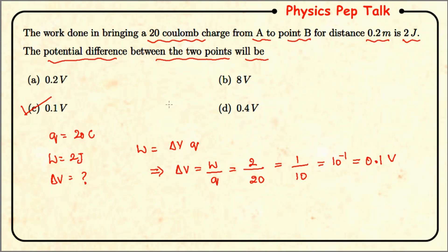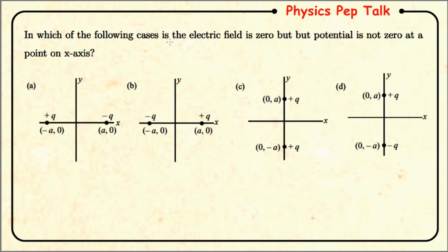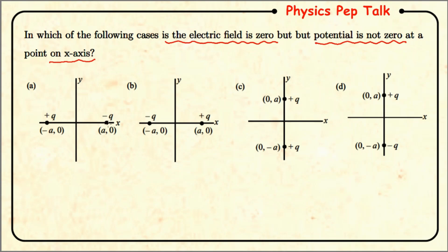Next question: in which of the following cases is the electric field zero but potential is not zero at a point on the x-axis? Consider option A: a positive charge and a negative charge separated by a certain distance, constituting a dipole. At a point on the x-axis between them, the electric field due to the positive charge and due to the negative charge both act in the same direction, so the net electric field will not be equal to zero. Therefore option A is wrong.